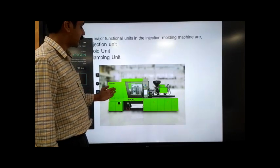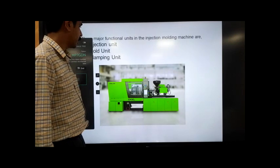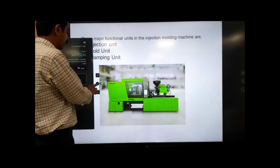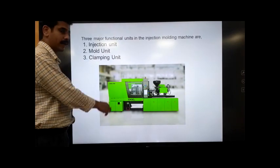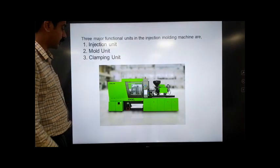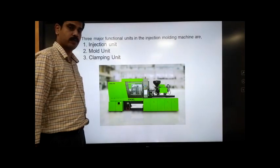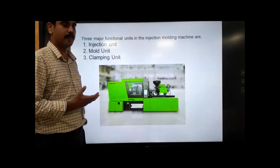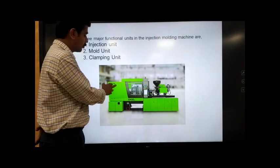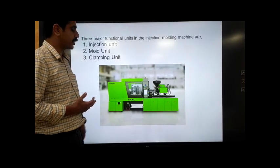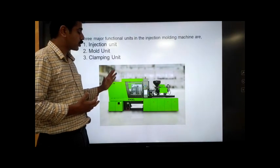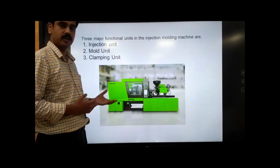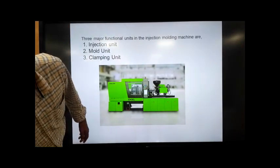The clamping region — the pressurizing region — is kept here. This is a Victory 160 machine, and the 160 is very important. The machine is rated based on its clamping force, or clamping tonnage. 160 means 160 tons of pressure can be exerted by the clamping unit to keep the mold at the closed condition. Based on this clamping force, we classify injection molding machines.